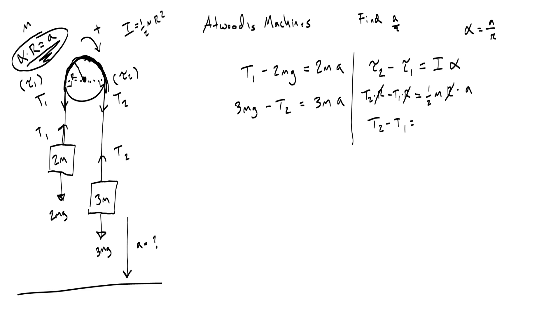T2 minus t1 equals one-half ma. Okay, awesome, this is my third equation that I can now use to eliminate t1 and t2. If I add the left sides together, and I add the right sides together, then t1 cancels out, t2 cancels out, and I get 3mg minus 2mg equals 2 plus 3 plus a half, so 5 and a half, which is 11 halves.